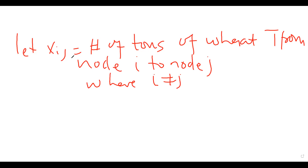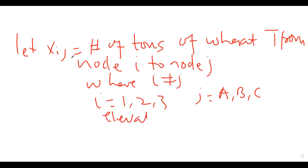Another way of defining it is where I equals 1, 2, 3 and J equals A, B, and C. Here you call I the elevator nodes and J the mill nodes. The objective function is always going to be within this parameter — defining it like this is always similar. In order not to confuse yourself, you say from node I to node J, and then you are sorted.